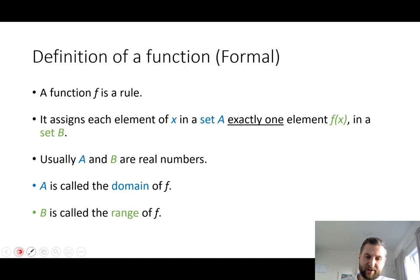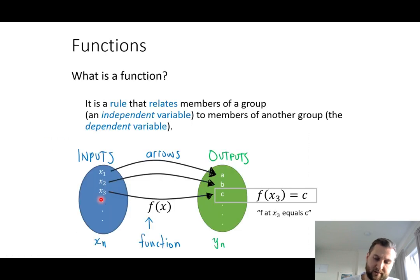So here we have a formal definition of a function where f is a rule. And f here can be thought of as my arrow. And what does it do? It assigns an element of x in the blue bubble to exactly one element in the green bubble.